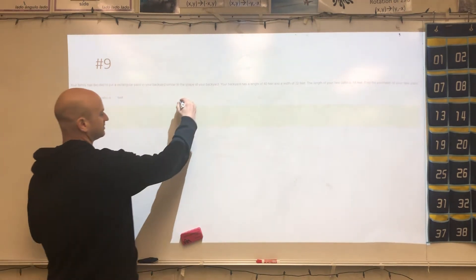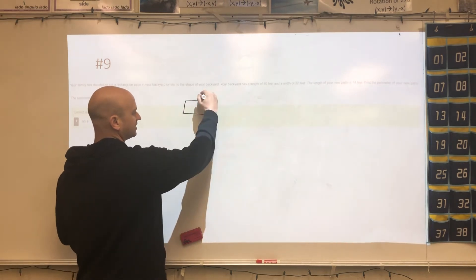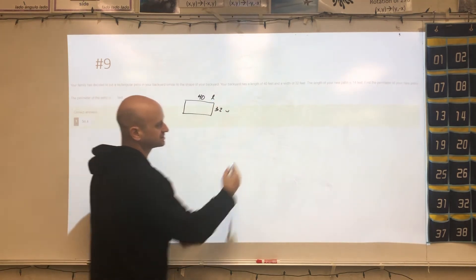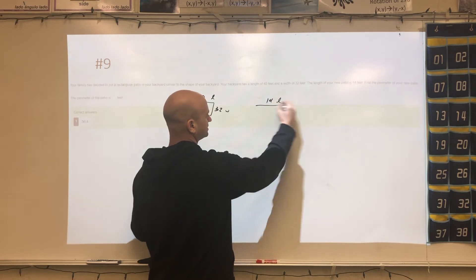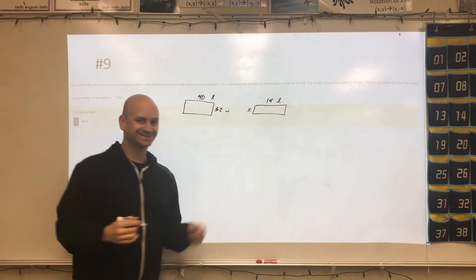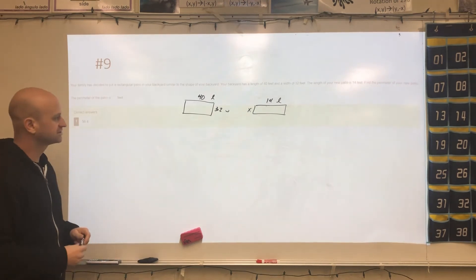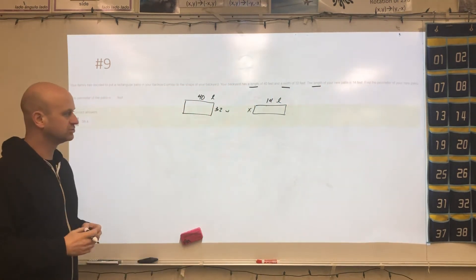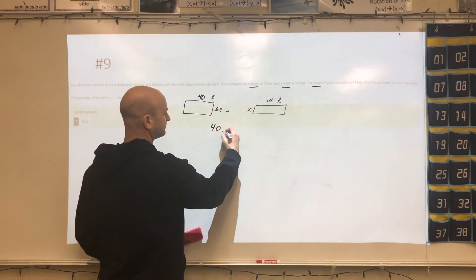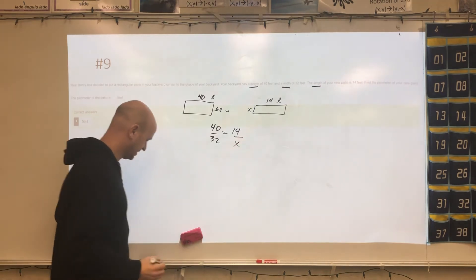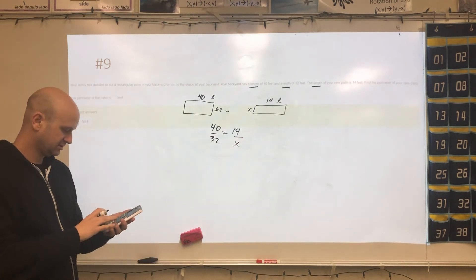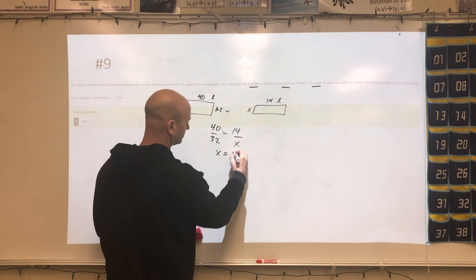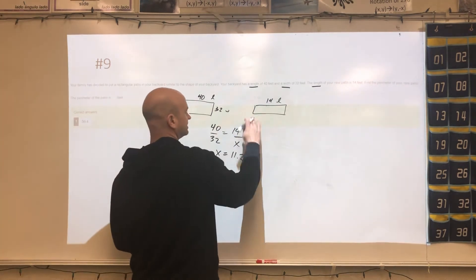All right, number nine, we have a rectangular patio. The backyard is 40 feet long by 32, and then it says the length of your patio is 14. They want you to find X and then find the perimeter of the actual patio itself. So in this case, the length and width and length are given in the problem, and that tells you what you need to match up with. So 40 equals 14, 32 equals X. So we'll cross multiply and divide. I get X equaling 11.2.